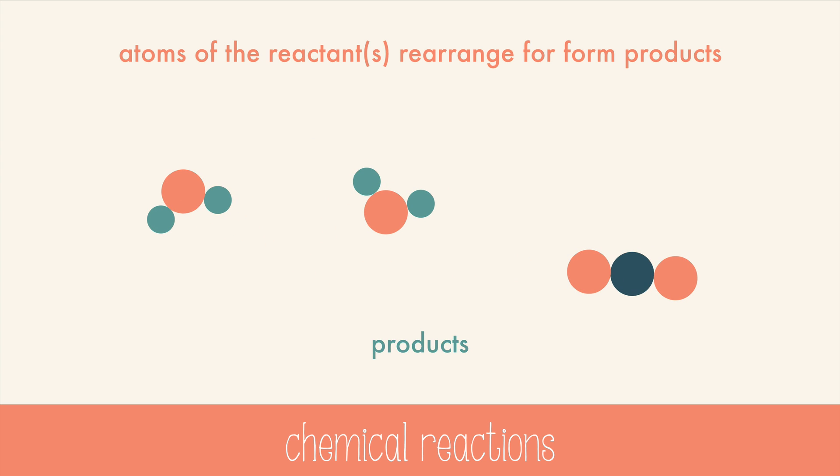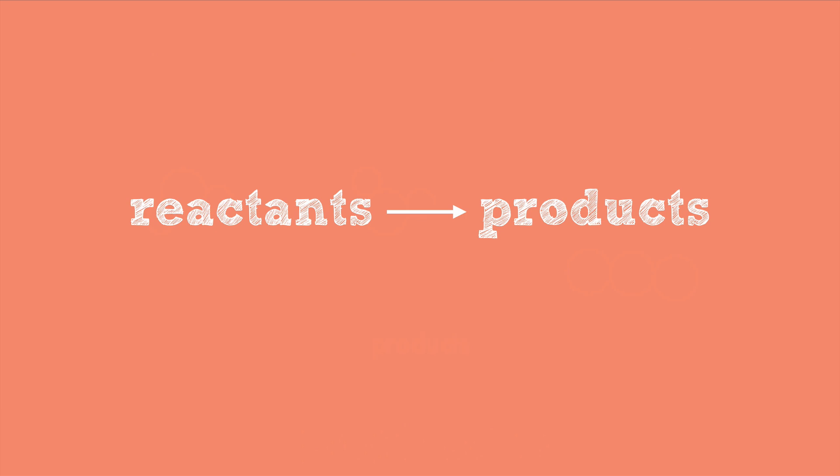To explain this in an equation, we use an arrow to symbolize the reaction. The arrow can be read as yields, gives, or reacts to produce. So this could say reactants yield products, reactants give products, or reactants react to produce products.